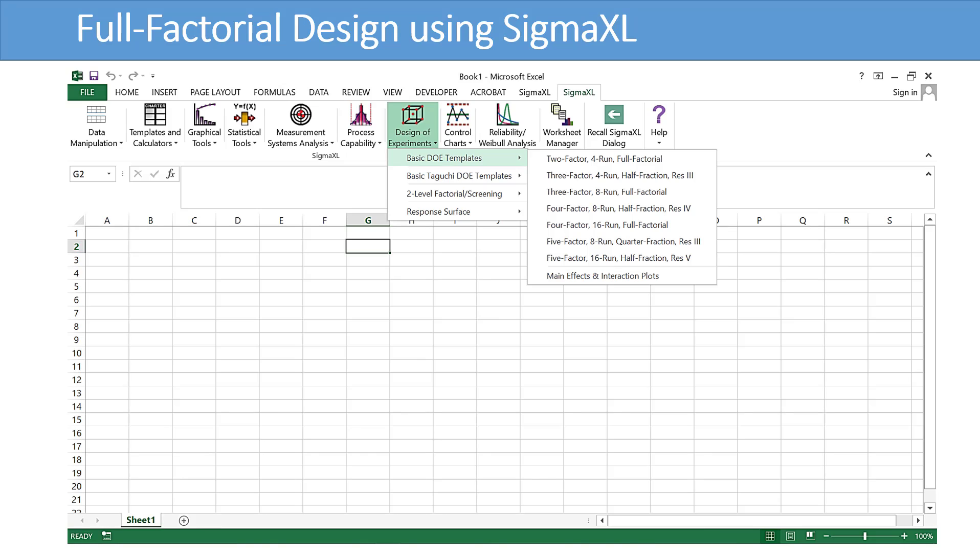In Sigma XL, click Sigma XL, then Design of Experiments, then click Basic DOE Templates to access these templates. 2 Factor 4 run full factorial, 3 Factor 4 run half fraction, 3 Factor 8 run full factorial, 4 Factor 16 run full factorial.